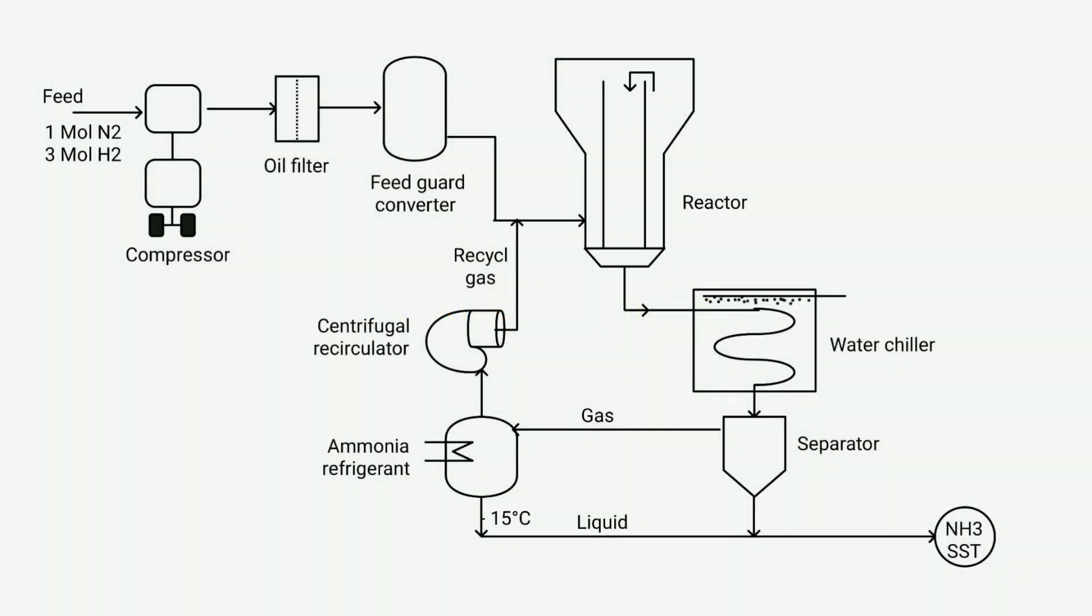Now let us know about all the equipment used in the manufacture of ammonia, and then after that, step by step, we will also understand its working process. So let's start. This is called a compressor. It compresses something by reducing its volume and increasing the pressure. In this process, it compresses one mole of nitrogen and three moles of hydrogen.